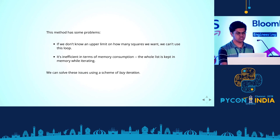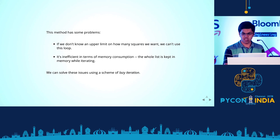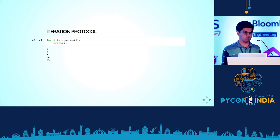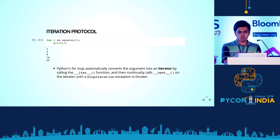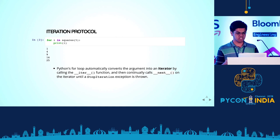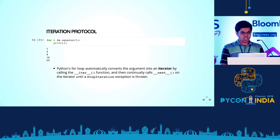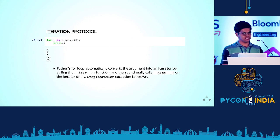The way we solve these issues is using what's called lazy iteration. Before we get into that, let's talk about how Python actually does iteration. When you write a for loop, what Python does is it looks at what you're iterating over — in this case, squares of five — and calls the iter function on that, which pops out an iterator. Then it keeps calling next on it. When next raises a StopIteration exception, that's when it exits the loop.